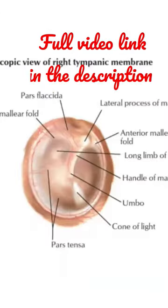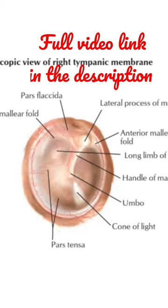This is a picture of an otoscopic view of the right tympanic membrane. When you see this, the circumference of the tympanic membrane is made up of a fibrocartilaginous ring, which is attached to the sulcus of the tympanic plate at the bottom of the external acoustic meatus.